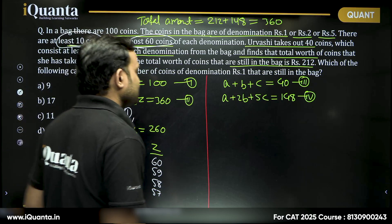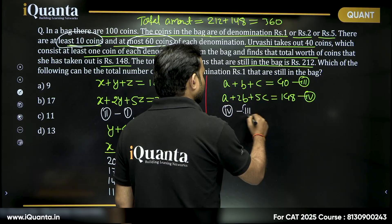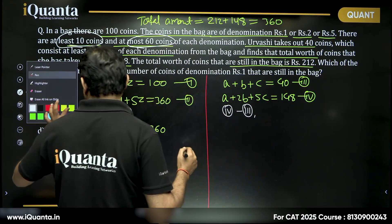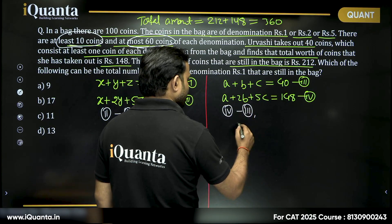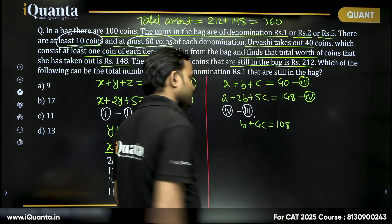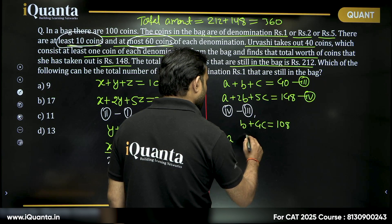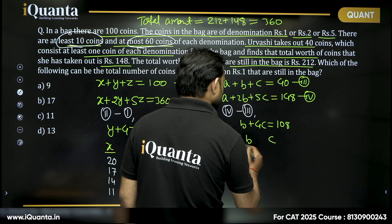Once again, if I subtract equation three from equation four, what are we getting? We get b plus 4c is equal to 108, right? Again starting with the maximum value, let us try to check the combination, the possible values of a, b, c. We know that each of these values must be at least one.